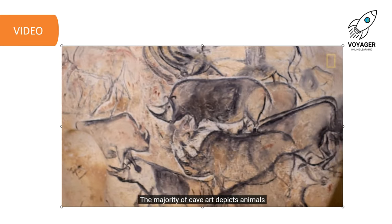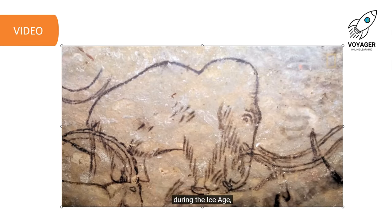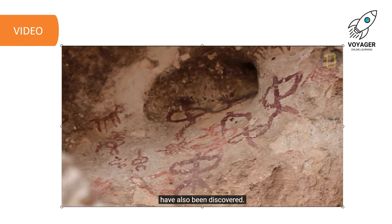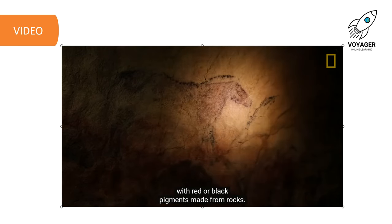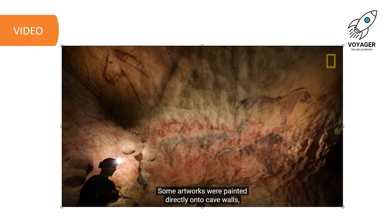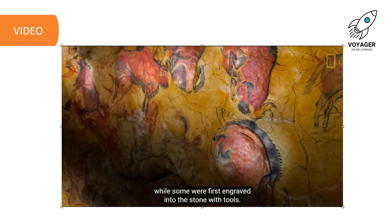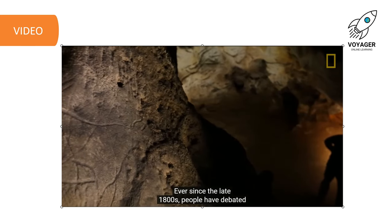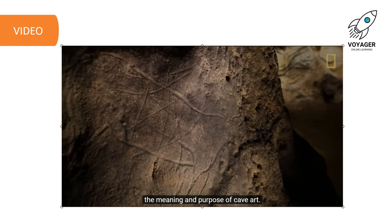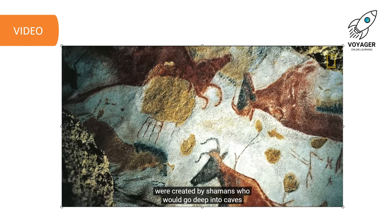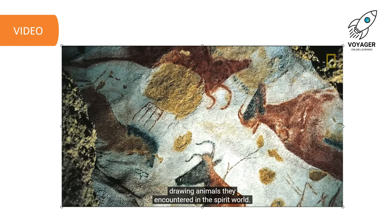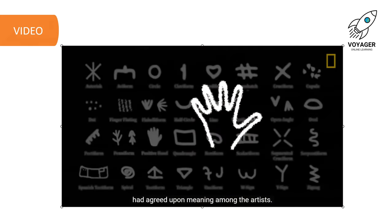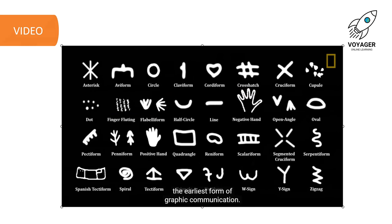The majority of cave art depicts animals that humans would have encountered or hunted during the Ice Age, such as mammoths, horses, lions, aurochs and deer. Some human figures and other symbols have also been discovered. Cave paintings were mostly created with red or black pigments made from rocks. Some artworks were painted directly onto cave walls, while some were first engraved into stone with tools. Occasionally, artists would follow the natural contours of the stone walls to accentuate an animal's features. People have debated the meaning of cave art since the late 1800s. Some scholars think cave paintings were created by shamans who entered a trance-like state drawing animals encountered in the spirit world. Symbols repeated across artworks may indicate agreed-upon meanings, suggesting cave art represents the earliest form of graphic communication.